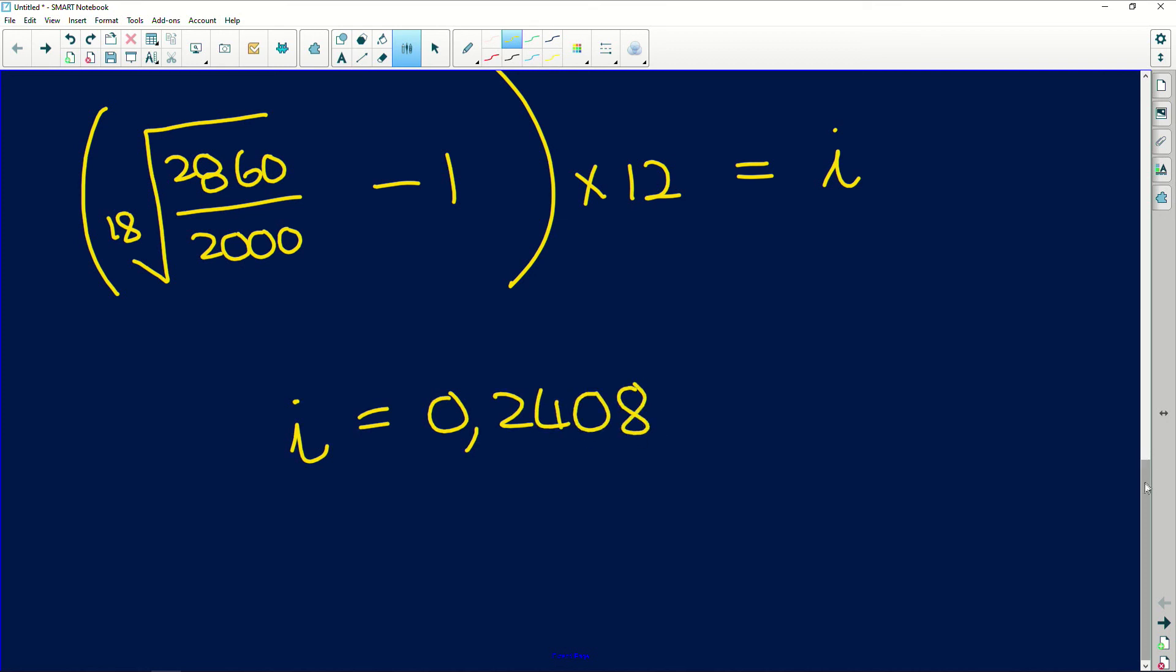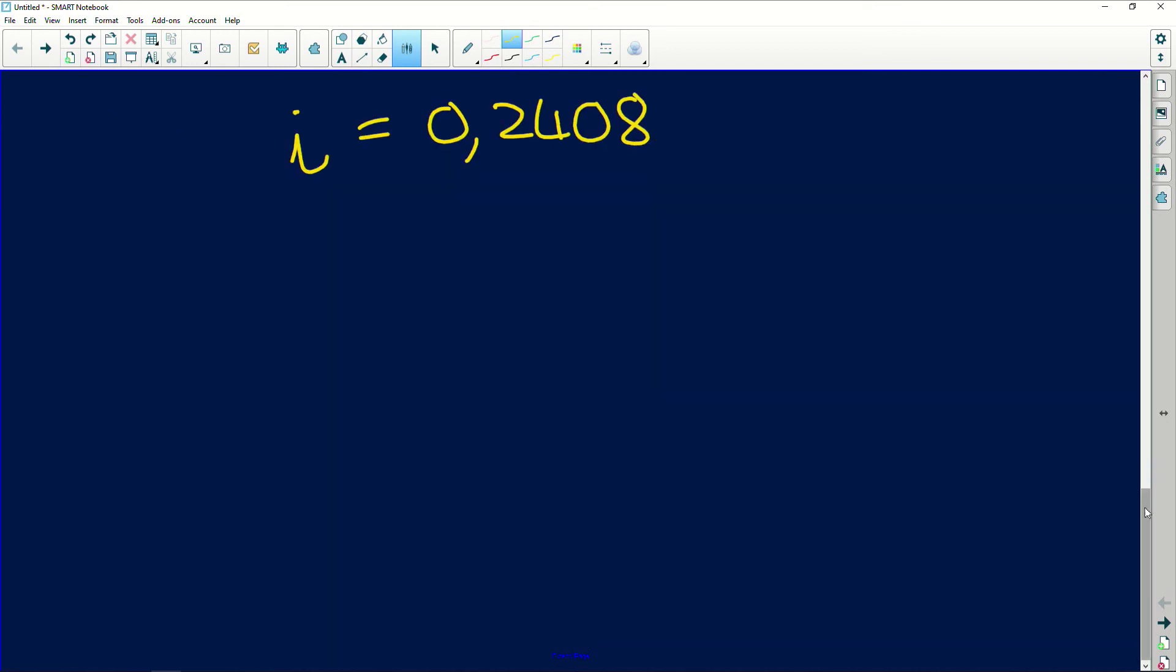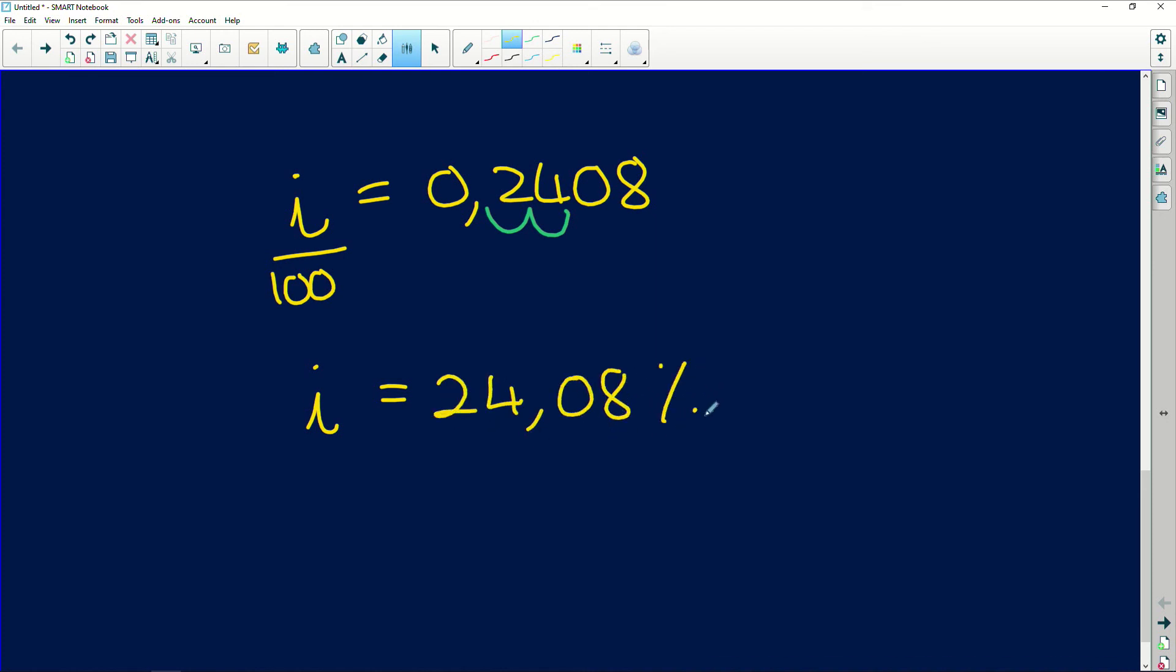But remember this is if we've divided by 100 to substitute it into our formula. So to get to the actual interest rate we multiply by 100, and remember your decimal stuff—if you multiply by the number of zeros in your 10th power, that's the number of spaces the decimal needs to move. So you're going to get 24.08 percent.